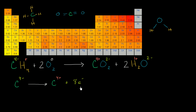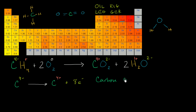So carbon in this reaction has lost eight electrons in our hypothetical oxidation number world. What do we call it when you are losing these hypothetical electrons? We can remind ourselves: OIL RIG — oxidation is losing electrons, reduction is gaining. Or LEO the lion says GER — losing electrons is oxidation, gaining electrons is reduction. So it's clear right over here that carbon is being oxidized. It is losing electrons. Carbon is oxidized.